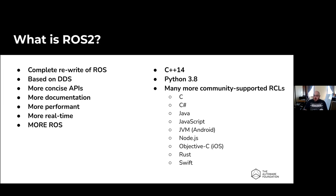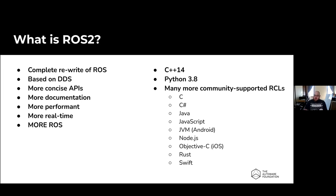There are ROS compatibility layers that allow you to write code for ROS in many different languages. The two primary fully supported languages are C++14 and Python 3, targeting Python 3.8 for the current version. There are also many community-supported compatibility layers for C, C++, Java, JavaScript, JVM from Android, Node.js, and Objective-C on iOS. So you can write applications on your PC and have a component on your cell phone that communicate with each other through ROS - it's a highly flexible system.